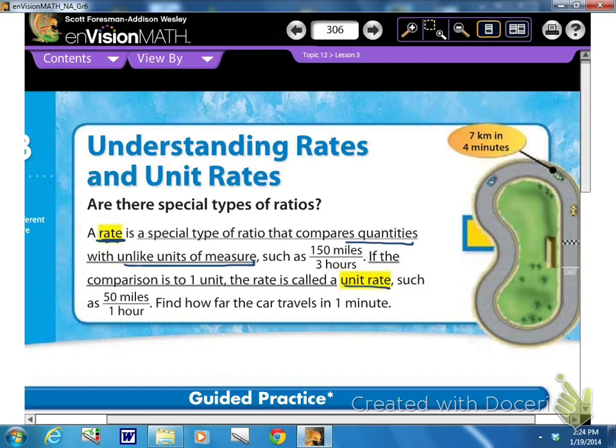For example, we have one right here, 150 miles and 3 hours, or 150 miles per 3 hours. If the comparison is to 1 unit, now notice this is 3 hours, so that would be 3 units, or it's 150 miles, so that would be 150 units. But if it's compared to 1 unit, then it's called the unit rate. For example, 50 miles per hour, or in one hour, is how far the car travels in an hour, or one unit.